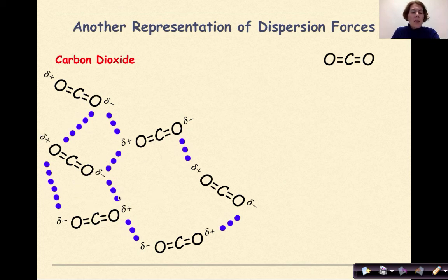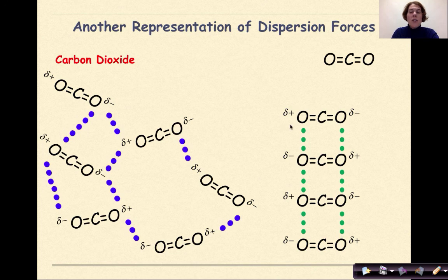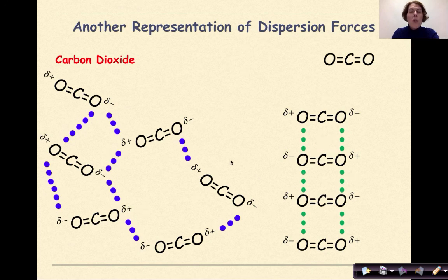This representation might represent liquid carbon dioxide — molecules not very ordered or close together, but with weak forces of attraction visible. If we increase pressure and lower temperature further, we might make dry ice, where the CO₂ molecules line up next to each other. We can see weak forces of attraction between slightly positive oxygens — where electrons have gathered — and slightly negative oxygens where electrons have pulsed to the other side. One representation shows liquid, the other a solid, both exhibiting dispersion forces.